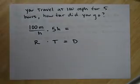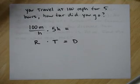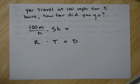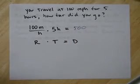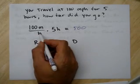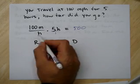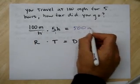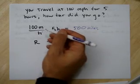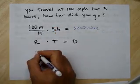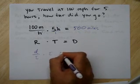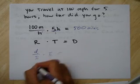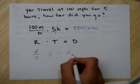You travel at 100 miles per hour for five hours — how far did you go? This isn't too tough: 100 miles per hour times five hours gives you 500 miles. Why can we do rate times time? Look at what happens algebraically. Miles per hour times hours — the hours cancel each other out, and the miles stick around. The rate is a distance per time, and when you multiply by some time, the times cancel out and you get distance.